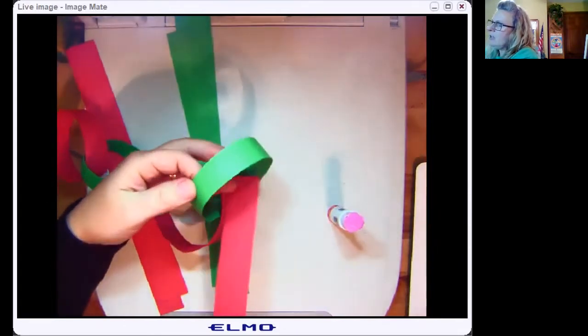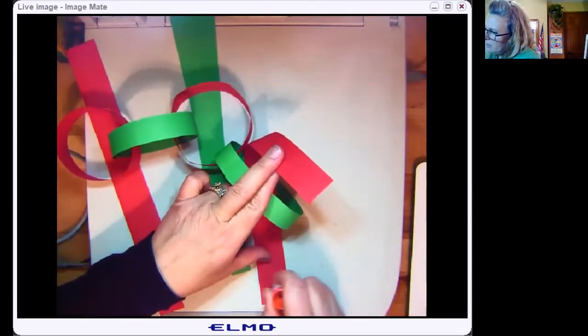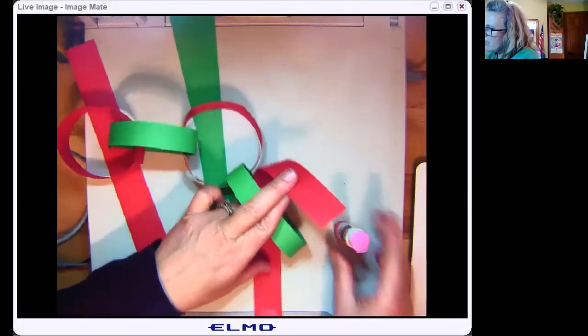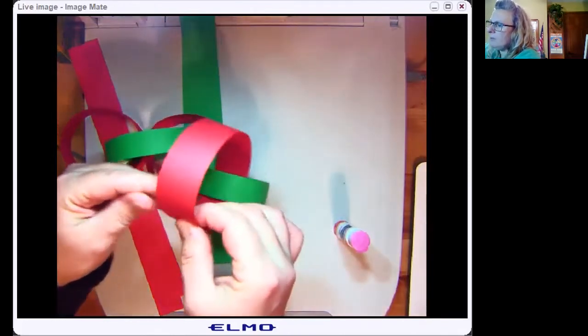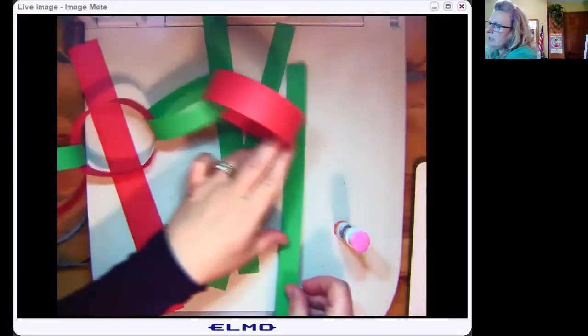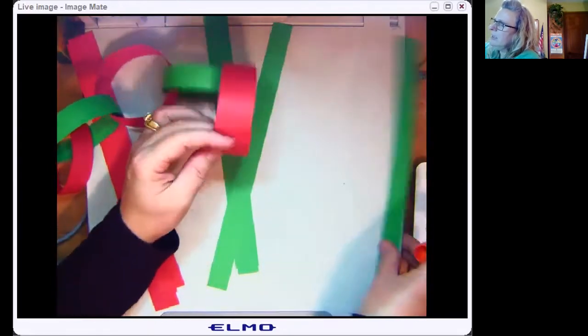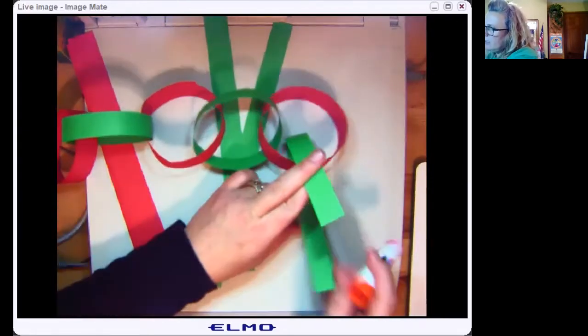And you will have a beautiful Christmas paper chain like Molly made. Now you can do whatever you want with this. You can hang it up in your room as a decoration. You can put it on your Christmas tree as a garland. Whatever you'd like to do with it.